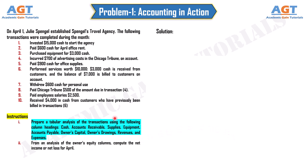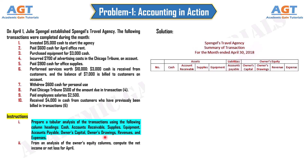To prepare a tabular analysis of the transactions, we start by writing the name of the company: Spengel's Travel Agency. This is a tabular analysis of the transactions for the month ended April 30th, 2018. Before making the tabular analysis, we carefully read and understand each transaction to determine which accounts are affected. The accounts are Assets — Cash, Accounts Receivable, Supplies, Equipment — Liabilities — Accounts Payable — and Owner's Equity — Owner's Capital, Owner's Drawings, Revenue, and Expenses. We have included the column headings accordingly.